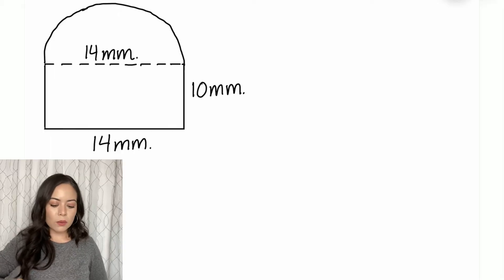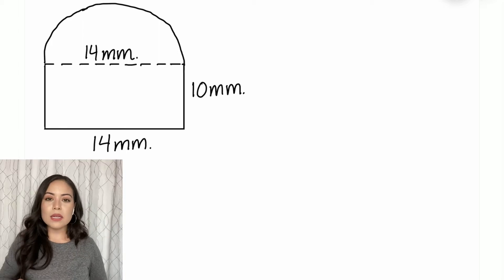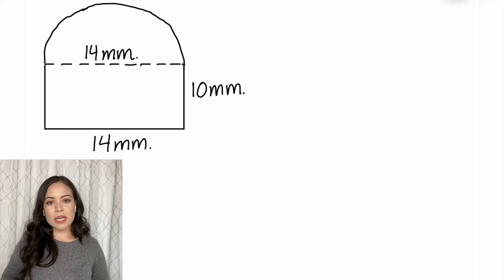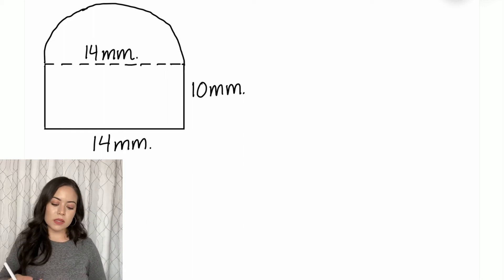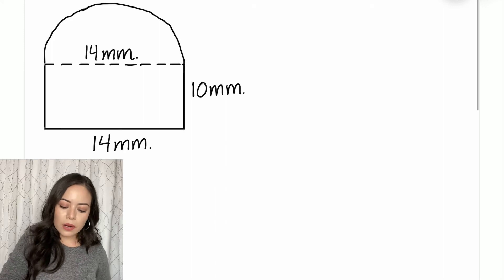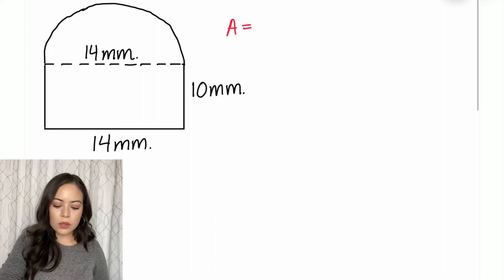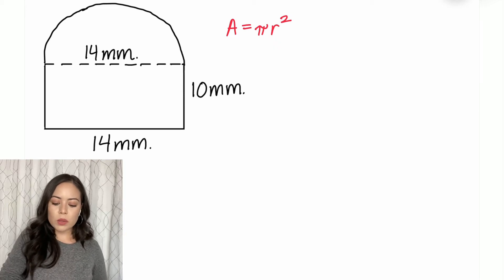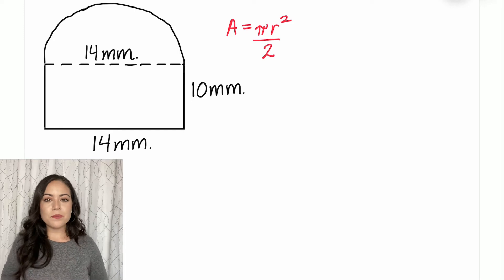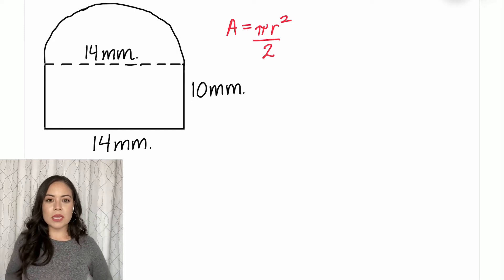Looking at our example one, it looks like we have a semicircle on top and a rectangle on the bottom. By finding the areas of each of those pieces and then adding them together at the end, we'll be able to calculate the total area of this irregular figure. So the area of a regular circle is pi r squared, but since we have a semicircle, that's half. So we're going to divide that area by two and that formula represents the area of a semicircle.